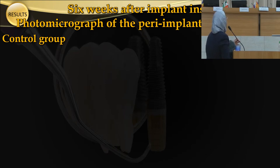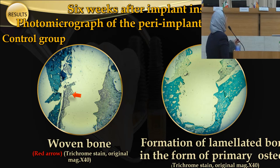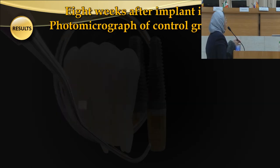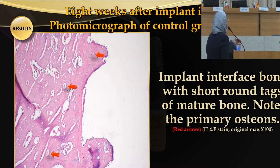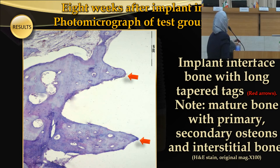Six weeks after implant insertion, photomicrographs of the peri-implant interface show woven bone in the control group and the formation of lamellar bone in the form of primary osteons in the test group. At the end of the study period, eight weeks, both groups achieved successful osseous tissue integration. In the control group, the implant interface bone showed short, round tags of mature bone without primary osteons. In the test group, the implant interface bone showed long, tapered tags of mature bone with primary, secondary osteons, and interstitial bone.